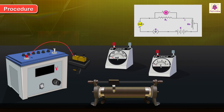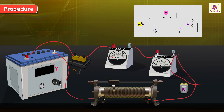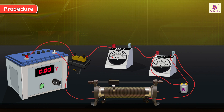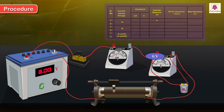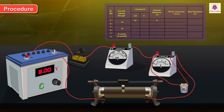Connect all the components according to the circuit diagram and switch on the circuit. Set the regulator of the variable DC power supply to obtain a low PD, say 6 volts. Switch on the current and gently adjust the slider of the rheostat to allow a current of small magnitude to pass through R1. Note down the readings of the two meters, then switch off the current.